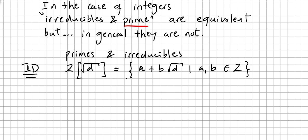Of course, there are some limitations here. d cannot be 1 — if d is 1, this is a trivial case. And d is not divisible by a prime squared; otherwise you get a different structure. So we are going to pick integral domains of the form a plus b times square root of d, such that a and b are integers, d is not 1, and d is not divisible by a prime squared.